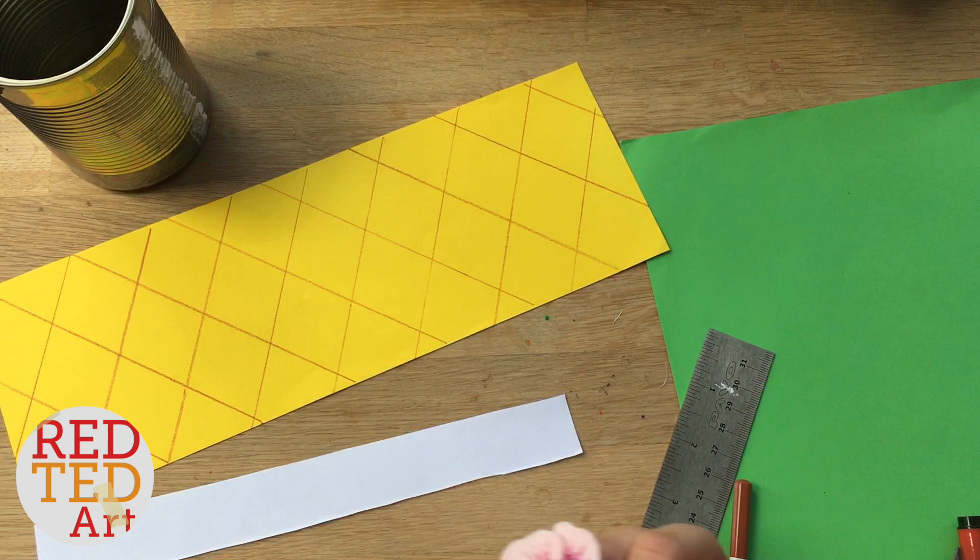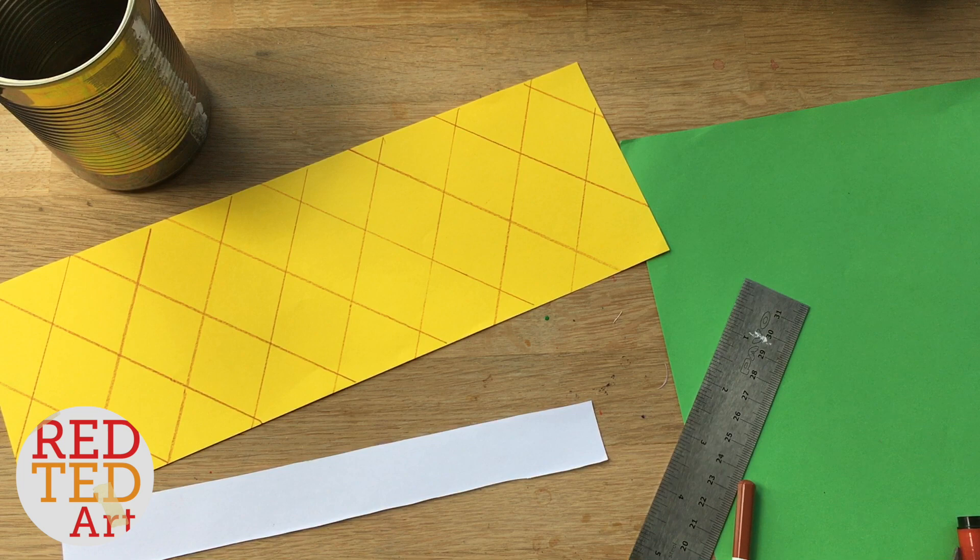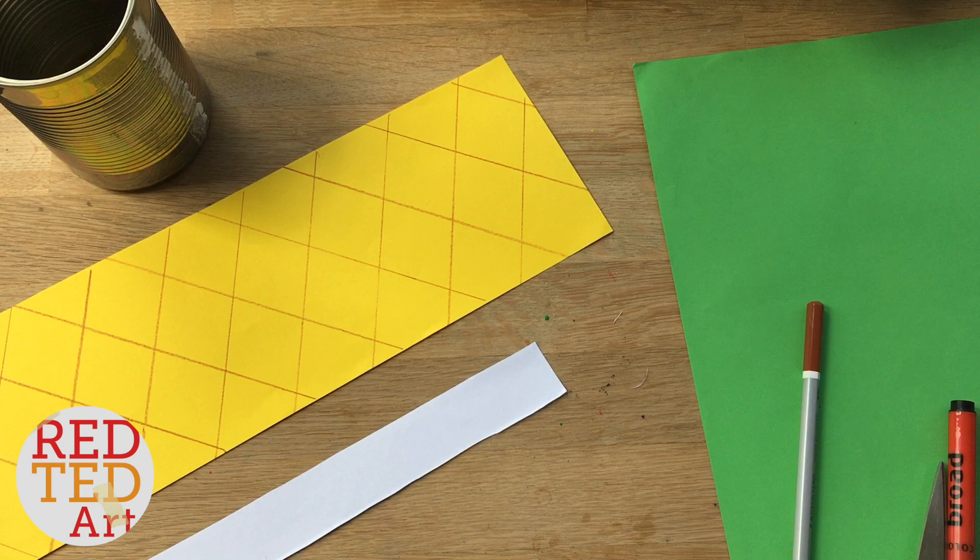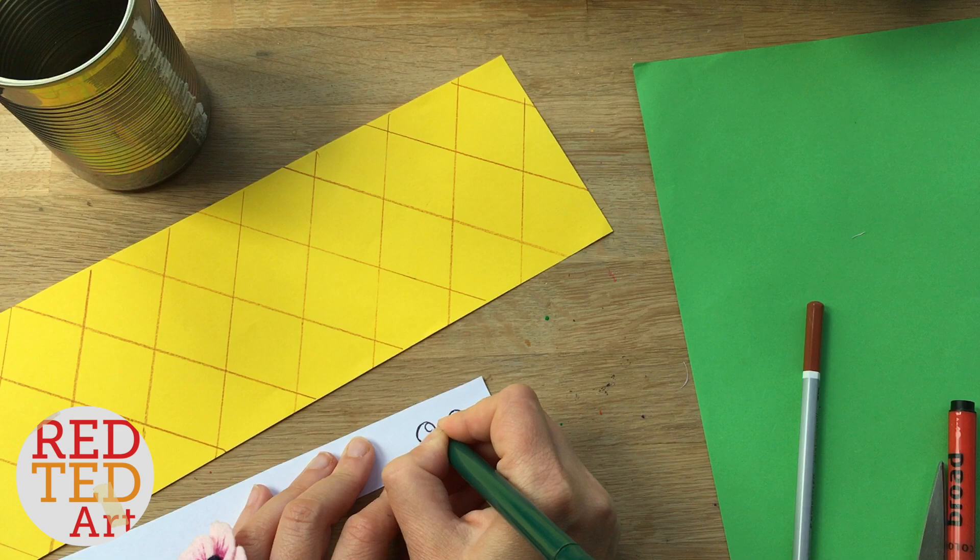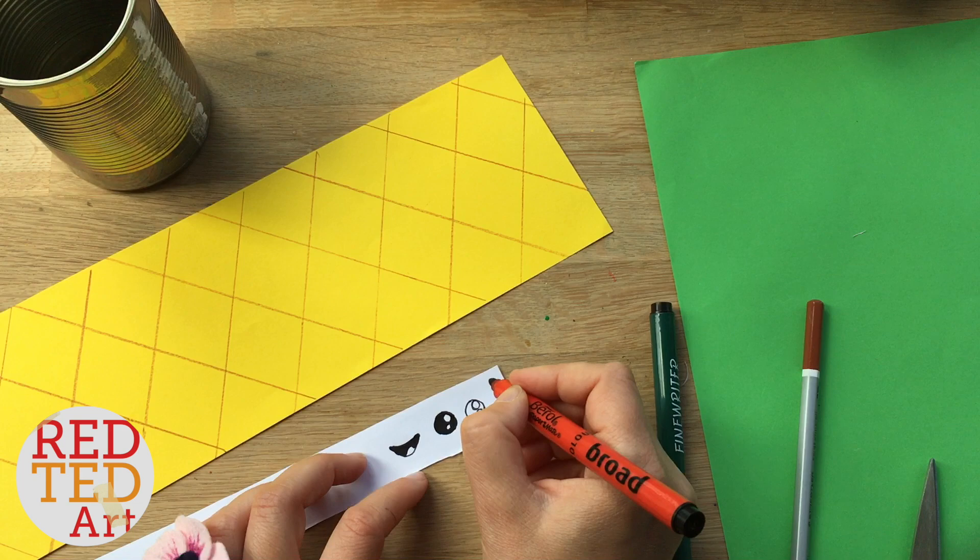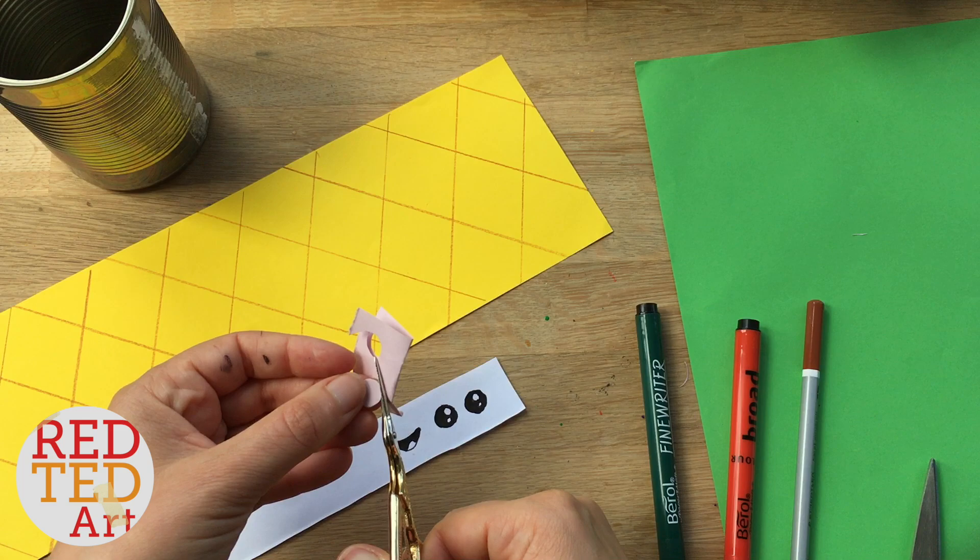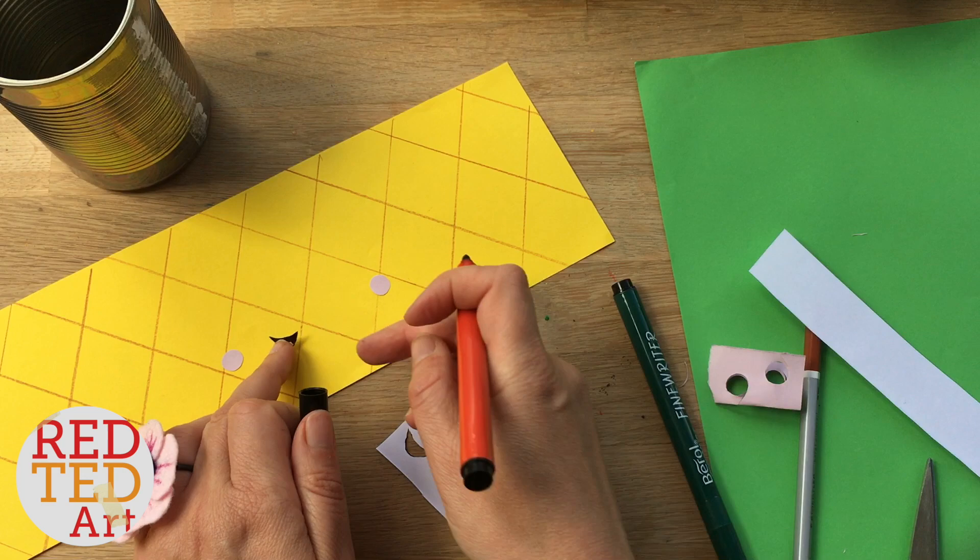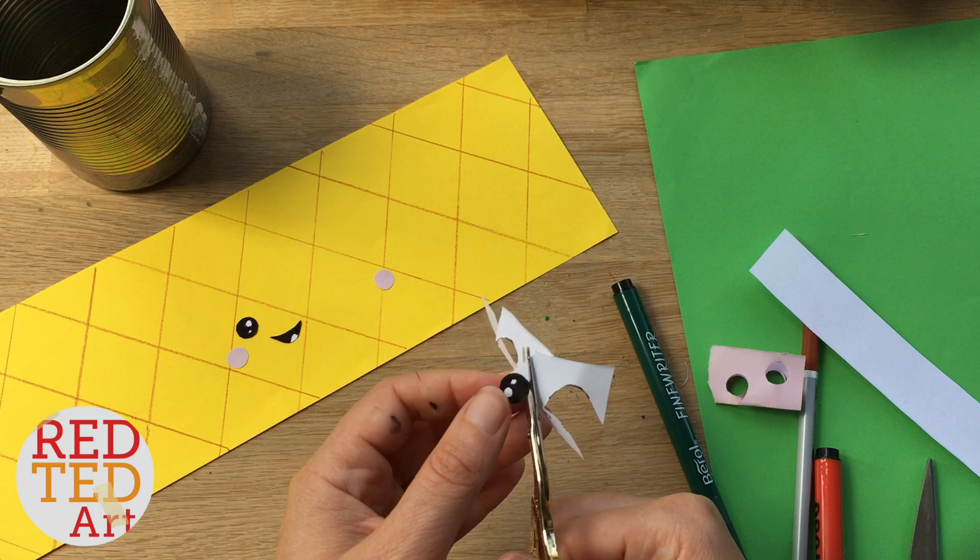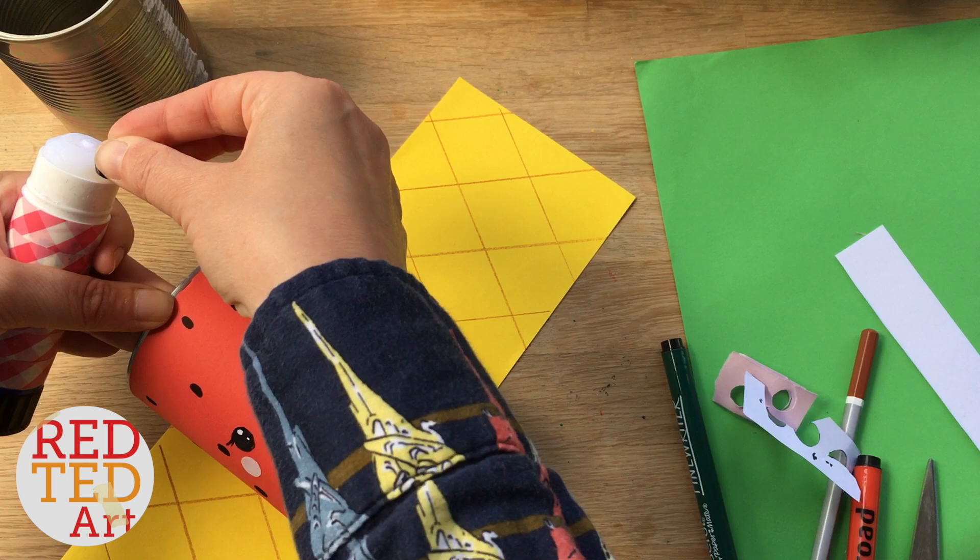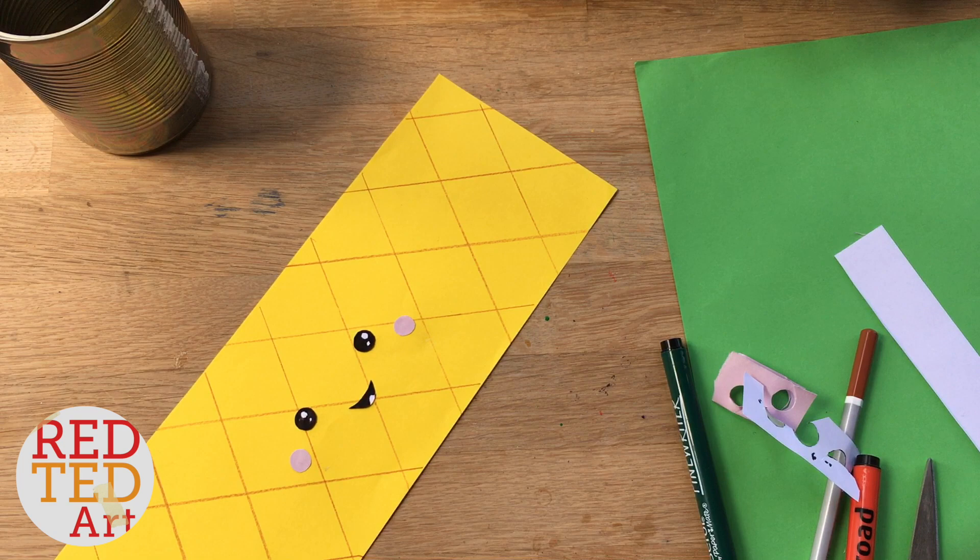So now we need to make our little pineapple face and it's going to be very similar to our watermelon one. I'm going to get a black pen, draw some eyes, a mouth, cut them out and we're going to stick those on. We're also going to need some pink cheeks if I can find the pink paper, but we'll have a look for that in a minute. Nice, let's put the cheeks a bit closer.